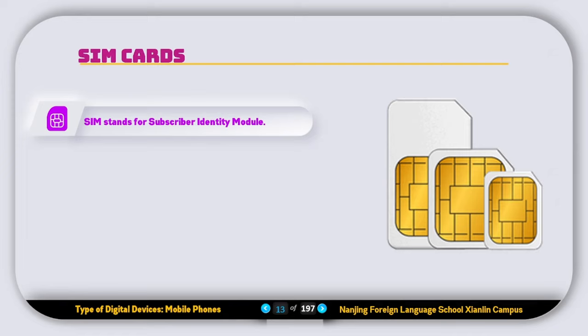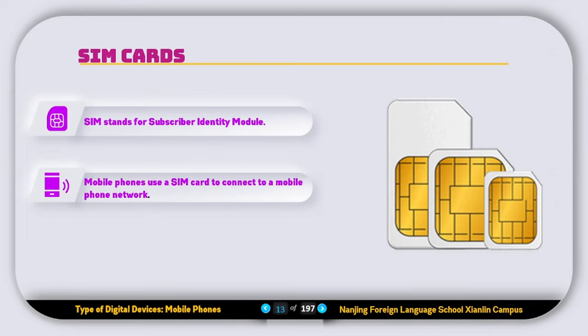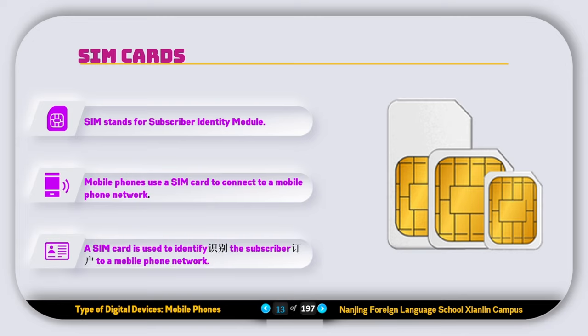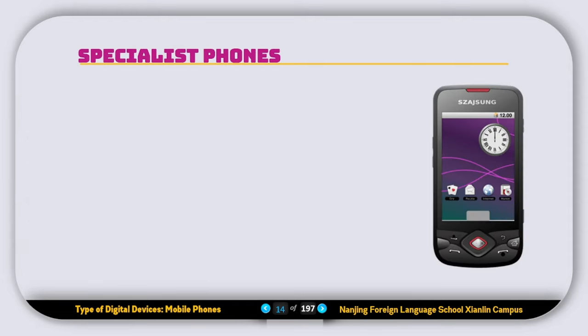Now let's talk about mobile phones and cameras. First, let's talk about SIM cards. SIM stands for Subscriber Identity Module. A mobile phone uses a SIM card to connect to a mobile network, and a SIM card is used to identify the subscriber to a mobile phone network.